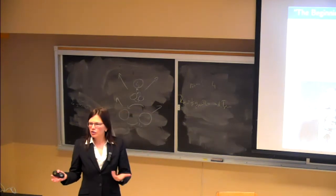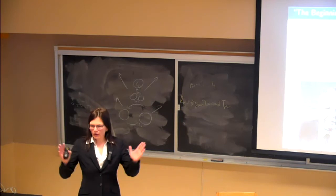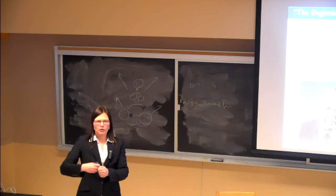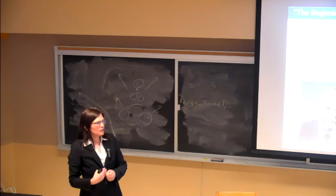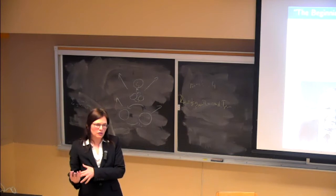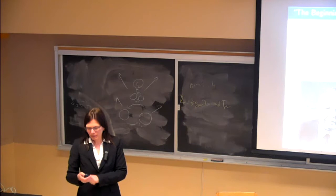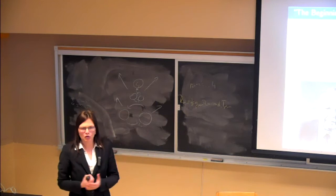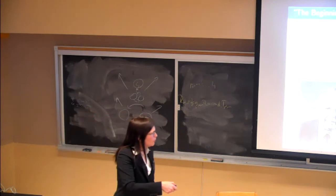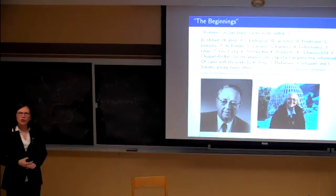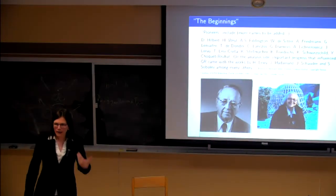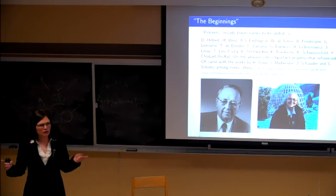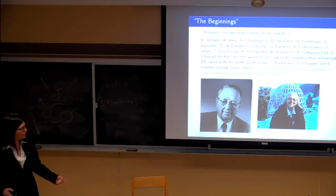Hermann Weyl raised the idea of causality: in the simple wave equation on a flat background, the speed of light gives you a domain of dependence — you can only influence something within your light cone in the future. Something similar is true in the Einstein equation. Weyl was the first to come up with this notion. Then Yvonne Choquet-Bruhat, who is now 95 and lives in France, was the first person in 1952 to write down the well-posedness for these equations — it took a very long time.